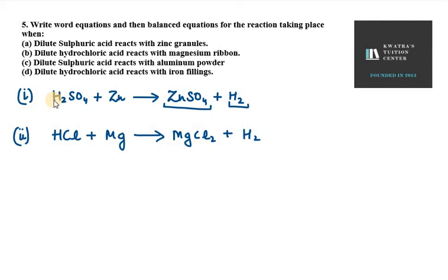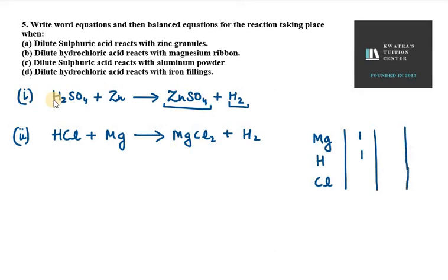Again, this is the same type of reaction between a metal and an acid — we get a salt and hydrogen gas is released. Now we check the balancing. On the left-hand side we have HCl, and on the right-hand side chlorine atoms are 2. So we need 2HCl on the left side. Therefore: 2HCl + magnesium gives magnesium chloride plus hydrogen gas.